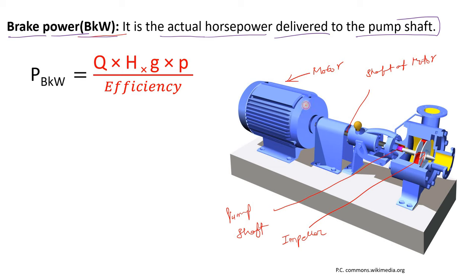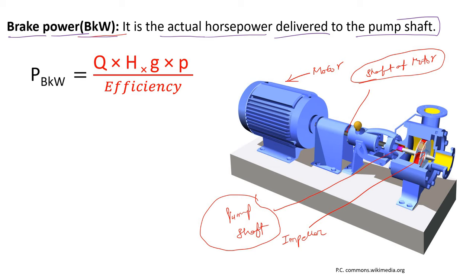When you start the motor, the rotor rotates and the motor shaft rotates, which is coupled with the pump shaft. Then the pump shaft rotates and the impeller rotates. BKW tells you the actual power delivered to the pump shaft by the motor shaft when your motor starts.